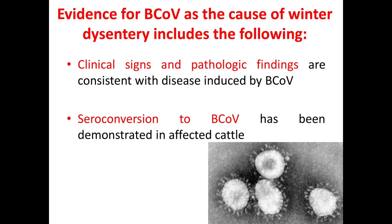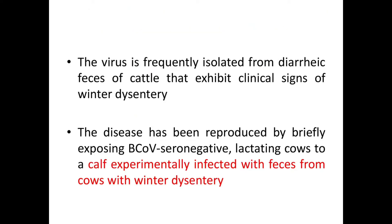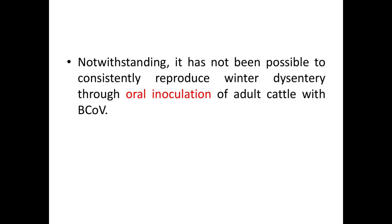Some evidences for bovine coronavirus as the cause of winter dysentery: first, clinical signs and pathologic findings are consistent with disease induced by bovine coronavirus; second, seroconversion to bovine coronavirus has been demonstrated in affected cattle; third, the virus is frequently isolated from diarrheic feces of cattle with clinical signs; and fourth, the disease has been reproduced by briefly exposing bovine coronavirus seronegative lactating cows to a calf experimentally infected with feces from cows with winter dysentery. However, it has not been possible to consistently reproduce winter dysentery through oral inoculation of adult cattle with bovine coronavirus.